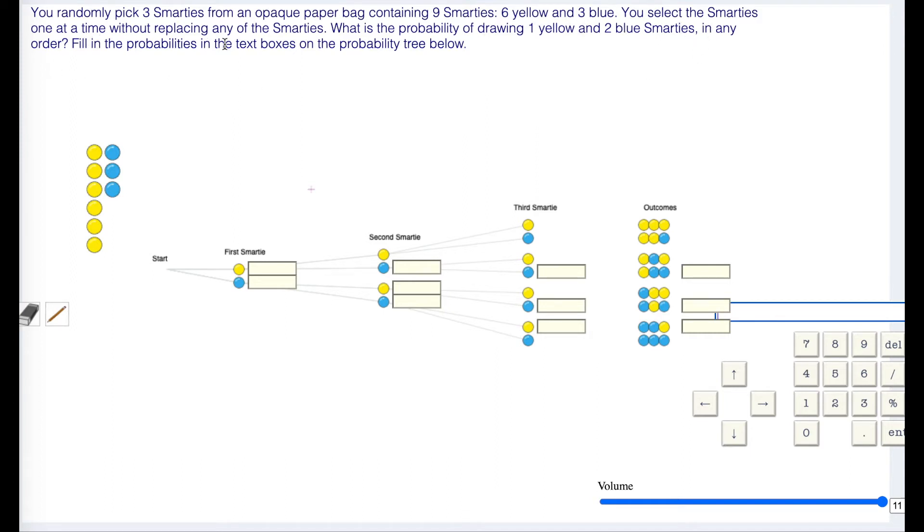Fill in the probabilities in the text boxes on the probability tree below, and also fill in the total probability in the big blue text box.